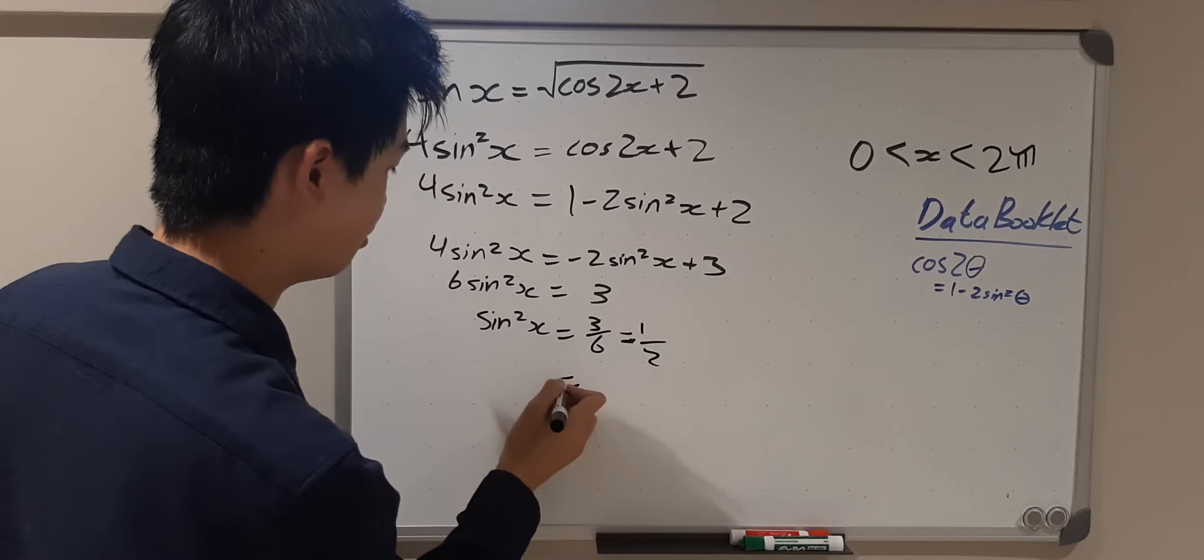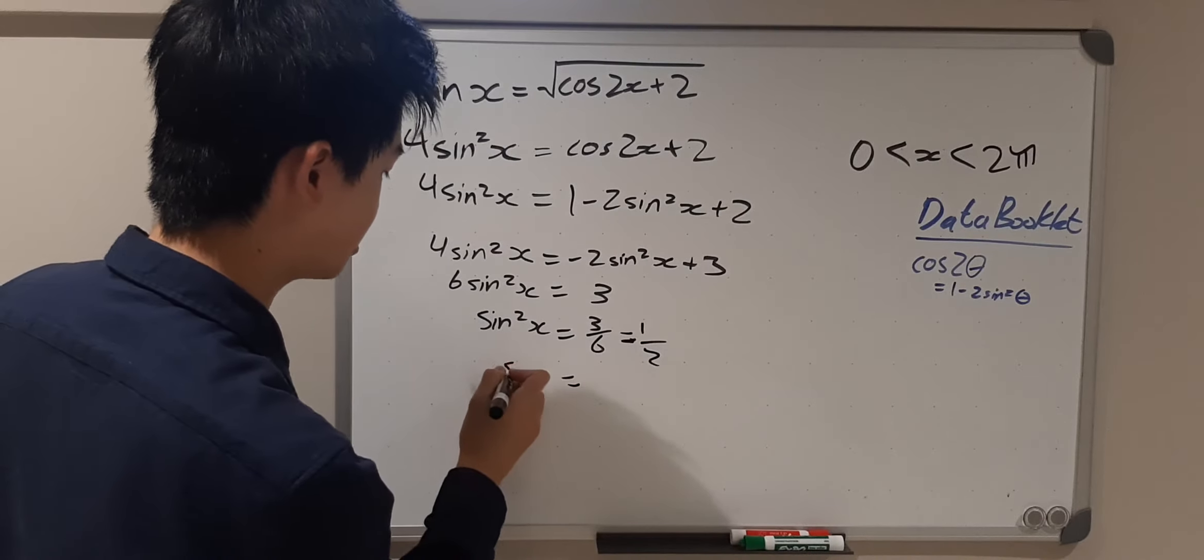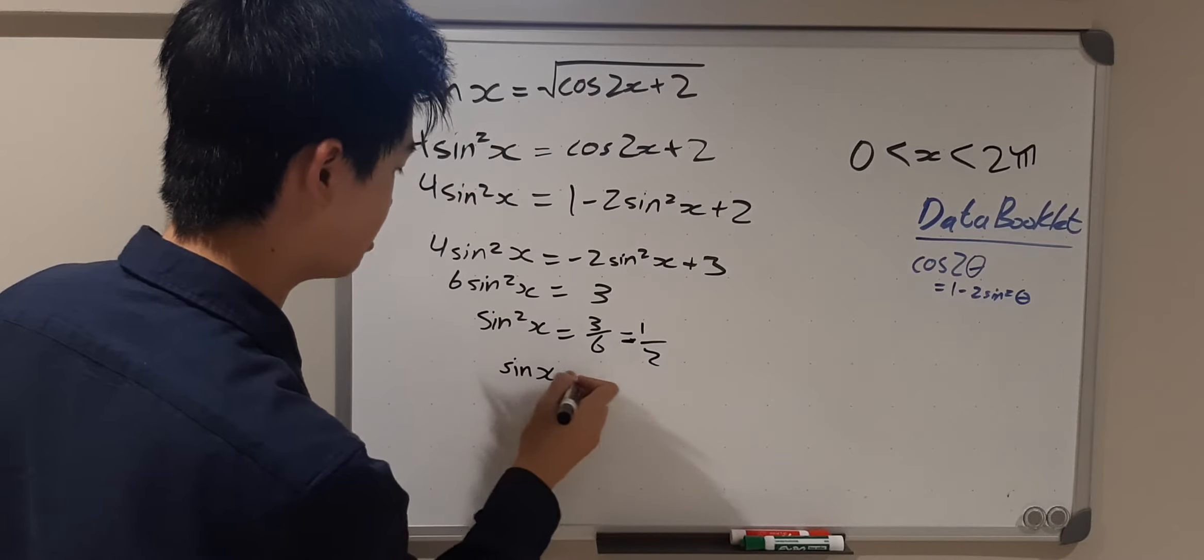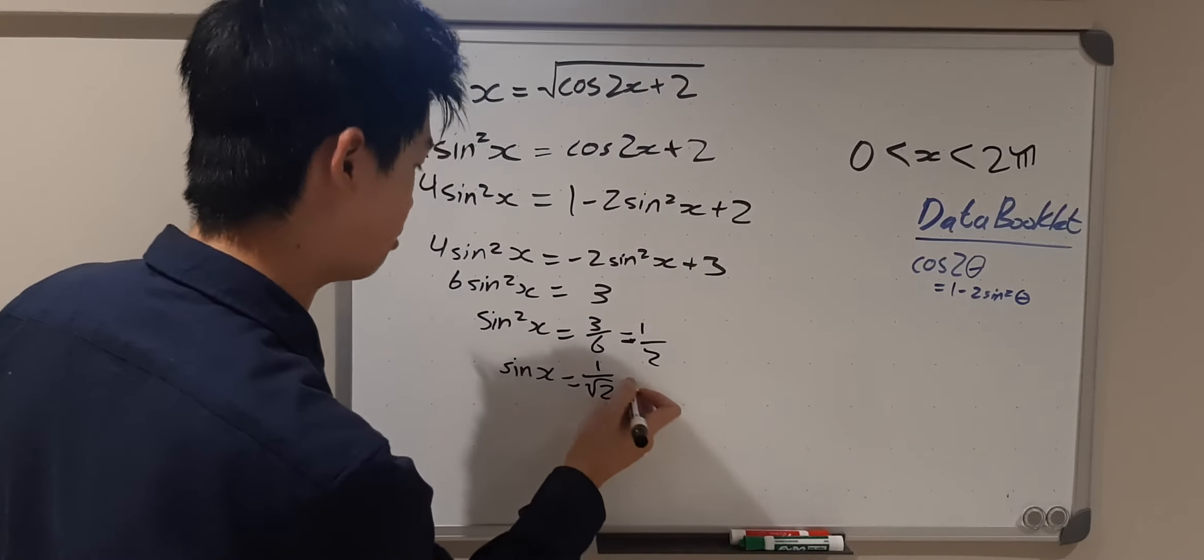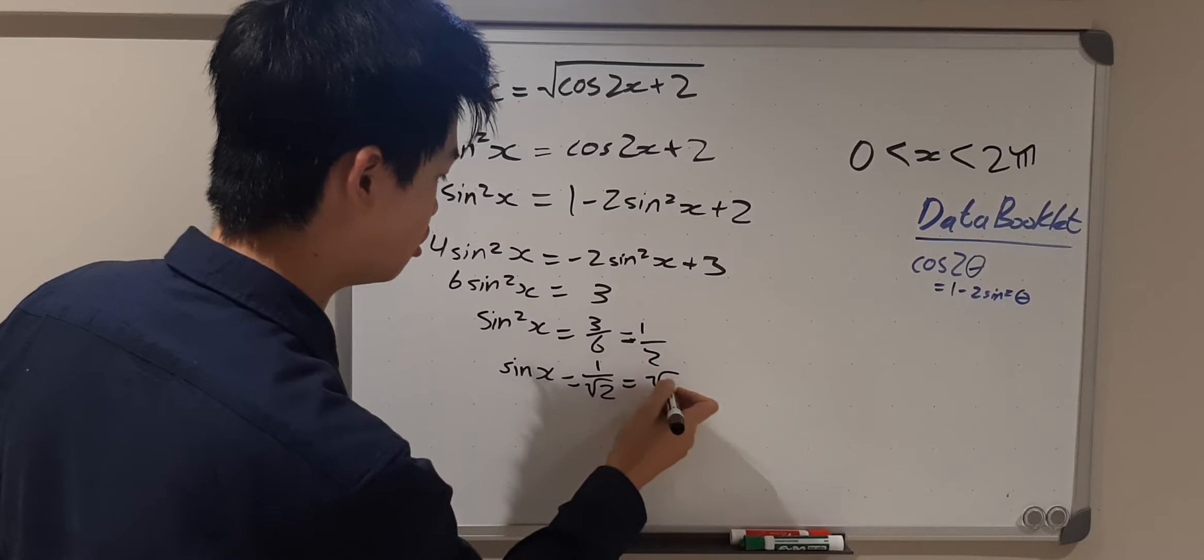Then we take the square root of both sides, so sin(x) = 1/√2, and we know that 1/√2 equals √2/2,